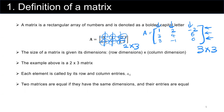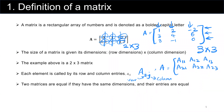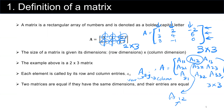Each element of a matrix can be represented by the name of the matrix with subscript i, j, where i shows the row and j shows the column of that element. A generic 3 by 3 matrix A is represented as A₁₁, A₁₂, A₁₃, A₂₁, A₂₃, A₃₁, A₃₂, A₃₃. For example, A₁₂ means row 1 and column 2.